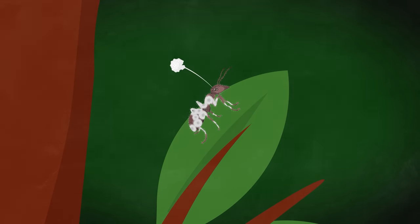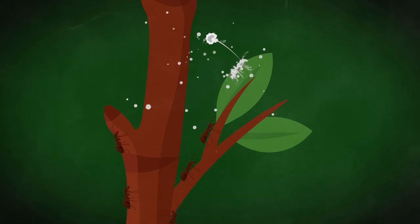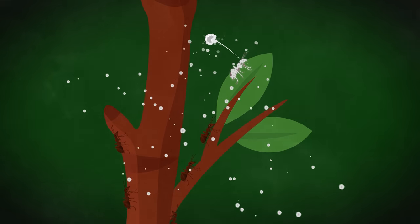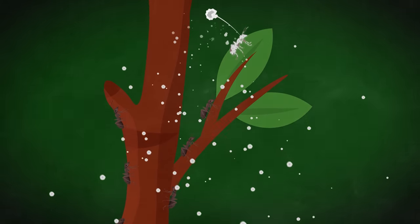Soon the fungus begins to bloom, growing out through the ant's exoskeleton into balls of spores that burst and shower down on all the ants scurrying across the forest floor below, starting the process all over again.